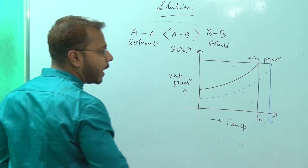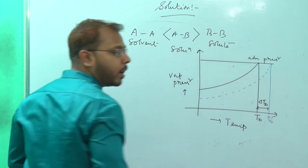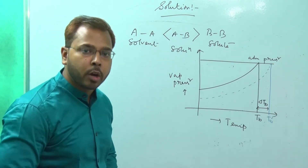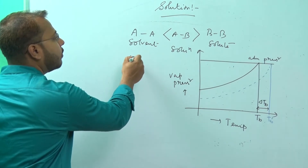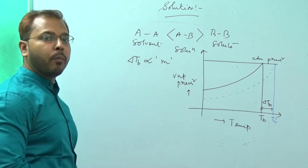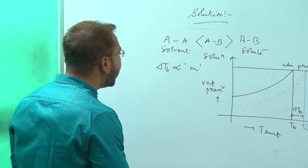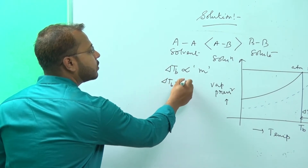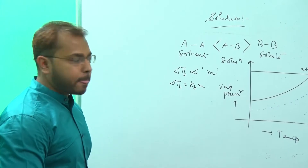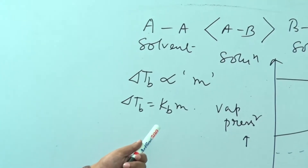This difference is known as the delta T_B — the elevation of boiling point. Elevation of boiling point is directly proportional to the molality term. So delta T_B equals K_B into m, where K_B is the elevation of boiling point constant, also called the ebullioscopic constant.